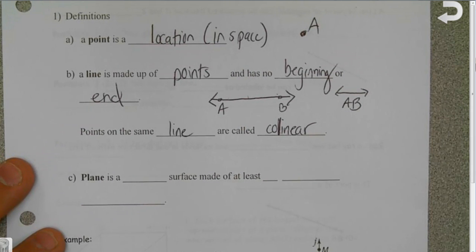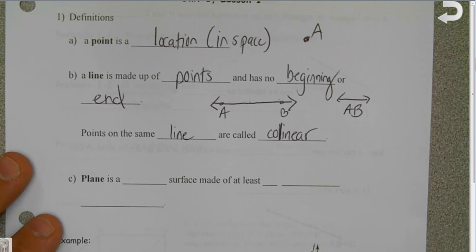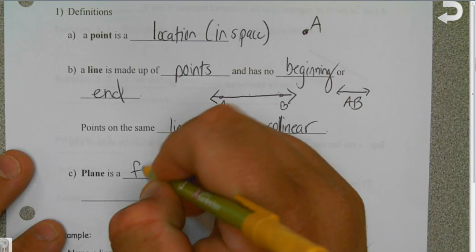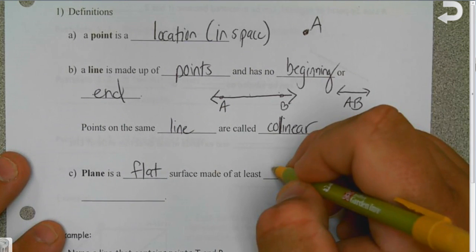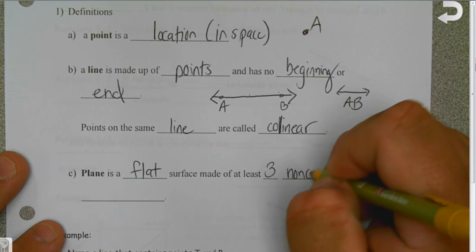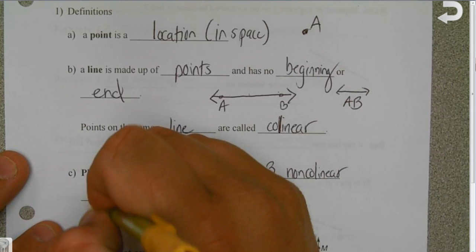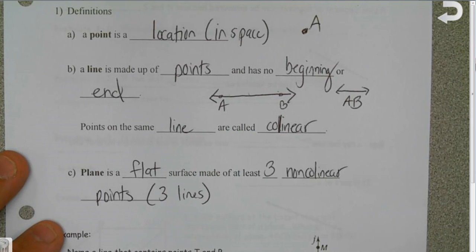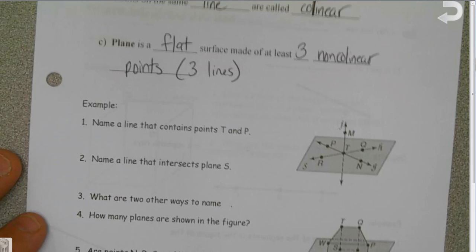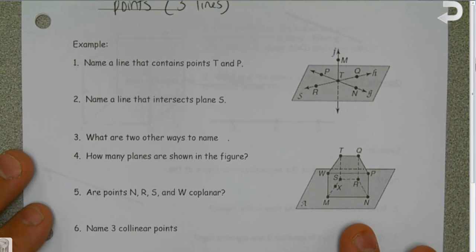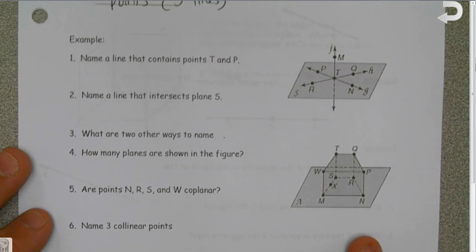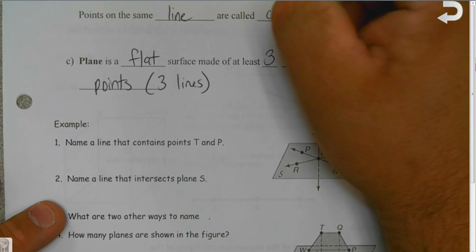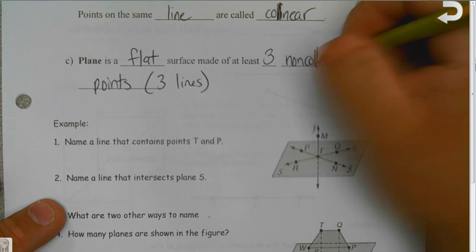If we have multiple points that go into making a line, if we have multiple lines, that's called a plane. A plane is a flat surface that is made of at least three non-collinear points that make three lines. Also, if points are on the same plane, they're called coplanar. Coplanar does have two L's, just like collinear.